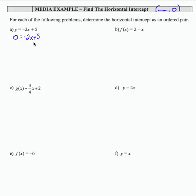To isolate x, I'm going to subtract 5 from both sides. When I do that, I get negative 5 equals negative 2x. Now I'm going to divide both sides by negative 2. A negative divided by negative is a positive, so I get 5 halves equals x. I can rewrite that as x equals 5 halves.